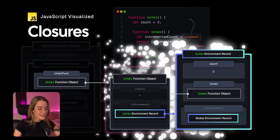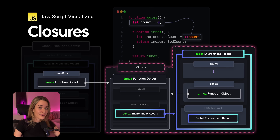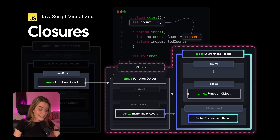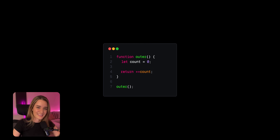As JavaScript developers, we often have to deal with closures, but have you ever wondered what they actually are behind the scenes? In this video, I'll try to explain just that. Before you watch this one, I highly recommend that you also watch my previous video on execution context and environment records, because I'll just be assuming some basic knowledge in this video.